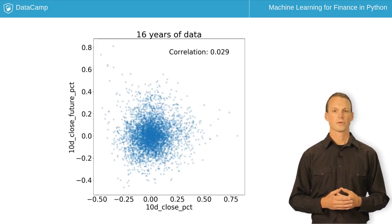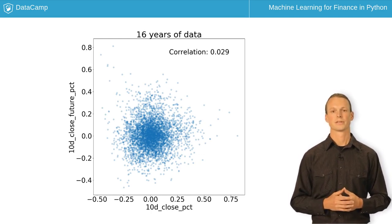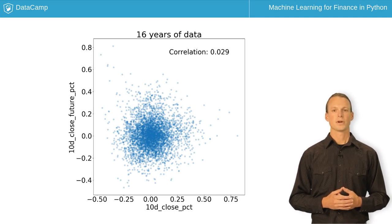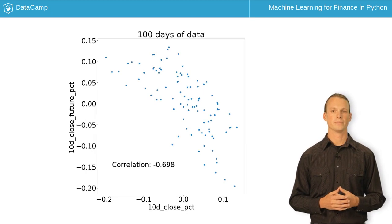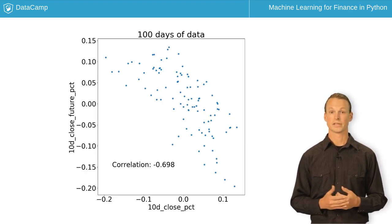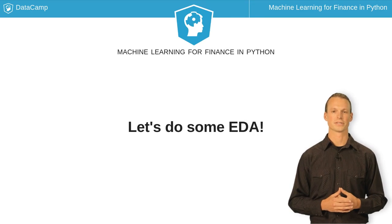Instead, we'll check the correlations between our percent price changes to see if previous price changes can predict future price changes. Notice the axis limits are almost the same because the price changes are only 10 days apart. Depending on the timeframe and parameters you use, you might see some strong correlations, like this negative 70% correlation from the middle of 2014. Now let's explore the data we'll be using in this course.